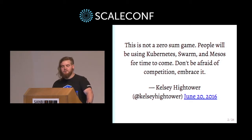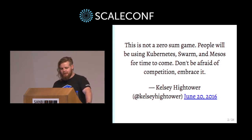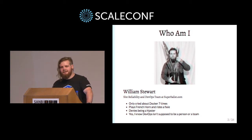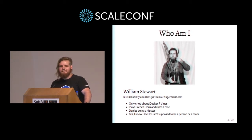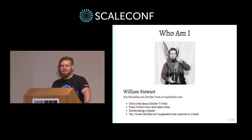This is a tweet by Kelsey Hightower, a Google employee who does a lot of community evangelist stuff for Kubernetes and cloud-native apps and services in general. I'm the team leader of the DevOps team at Superbalist. I know DevOps isn't supposed to be a team thing, but it supposedly is. Our official internal team name is Site Reliability, because that's sort of what we do, but we also do development tooling, release engineering - all the things Google and Facebook call it.